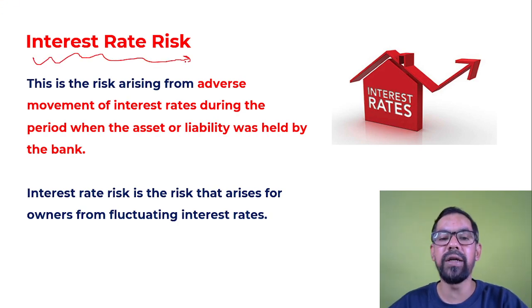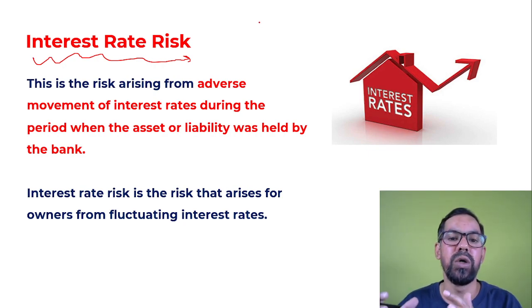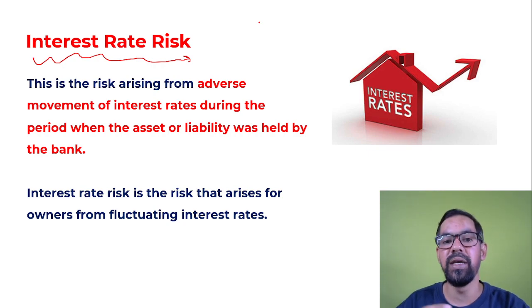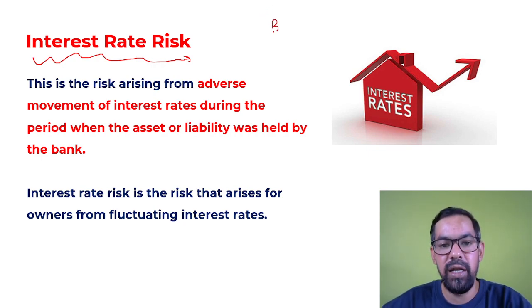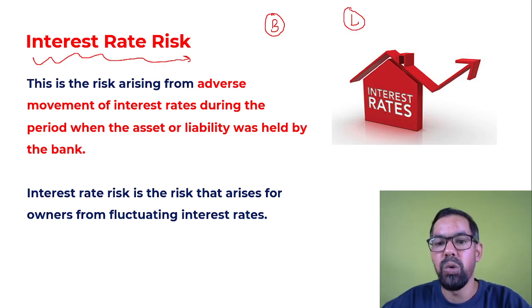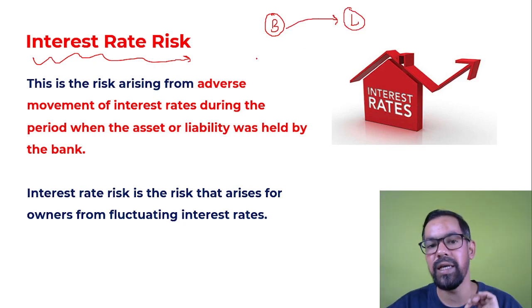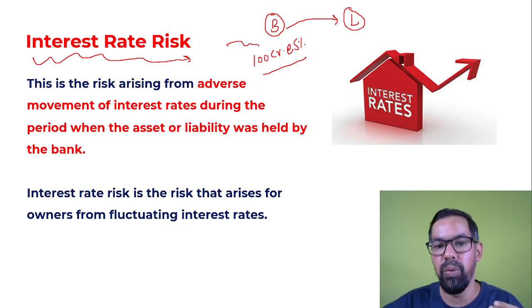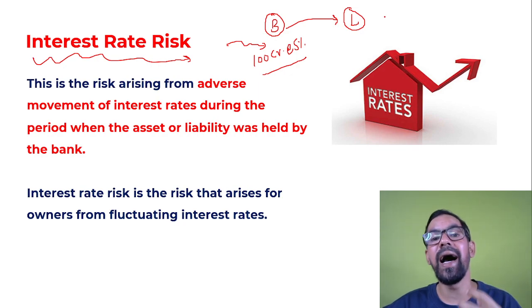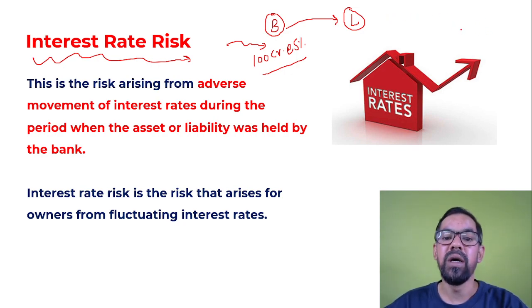Interest rate risk: this is when changes in interest rates make an adverse impact on bank business. Here's an example with a bank: a bank's primary function is borrowing for the purpose of lending. A bank borrows 100 crore rupees at an average rate of 5%. At the time of borrowing, interest rates in the market were high — they were lending at around 10-15%, giving them a specific margin. The bank committed to pay investors 5% per annum on their deposits.